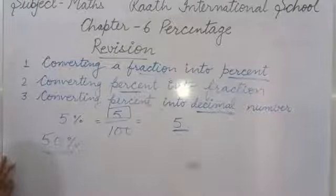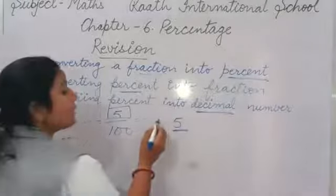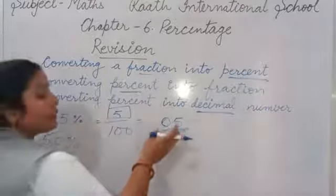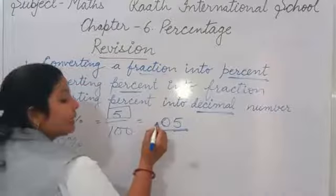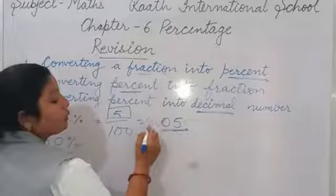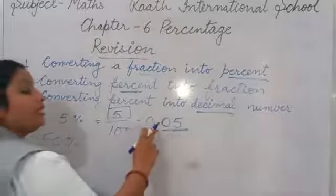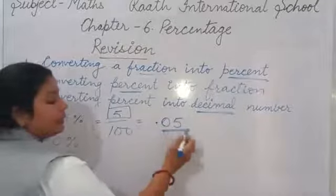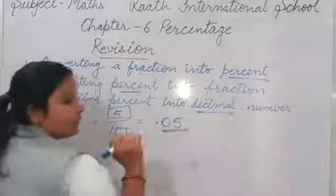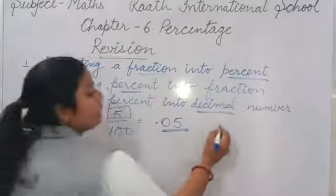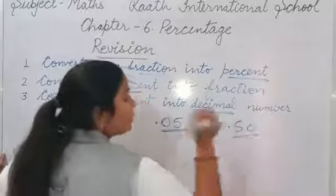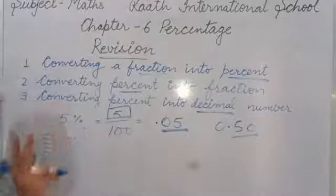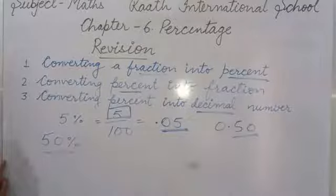So how can we make 2 places? Before the 5 we can place a 0. Now our places become 2, so we can put the decimal point here. It becomes 0.05. We can also write 0.05 with a leading zero. Both are correct. But take care: do not put 0 after the 5 on the back side, as that would make it 50 percent. When you have only a single digit in the numerator and you want 2 decimal places, place the zero before the digit.